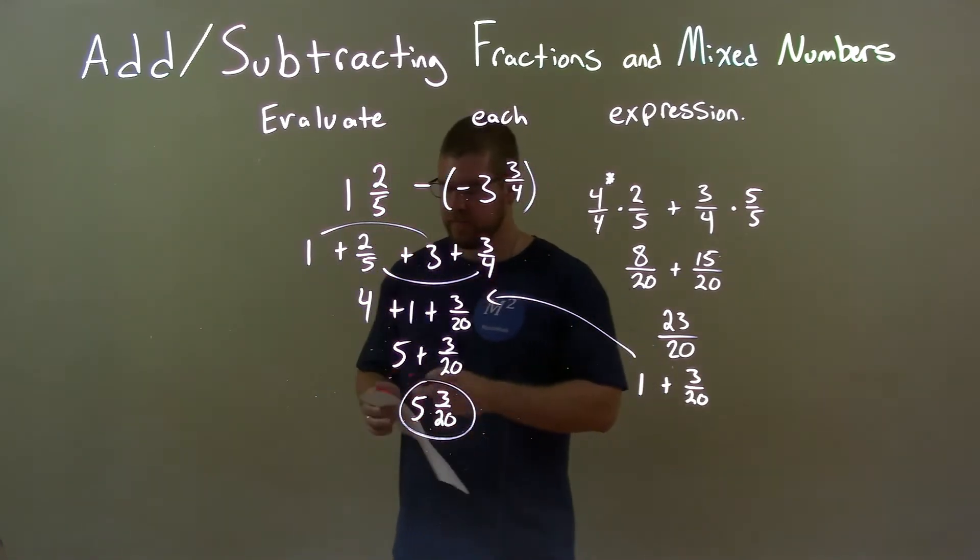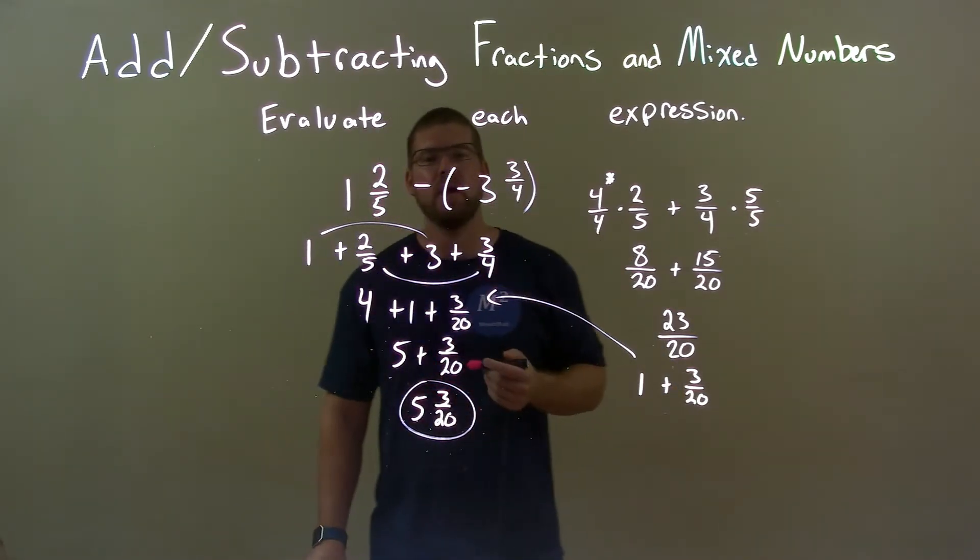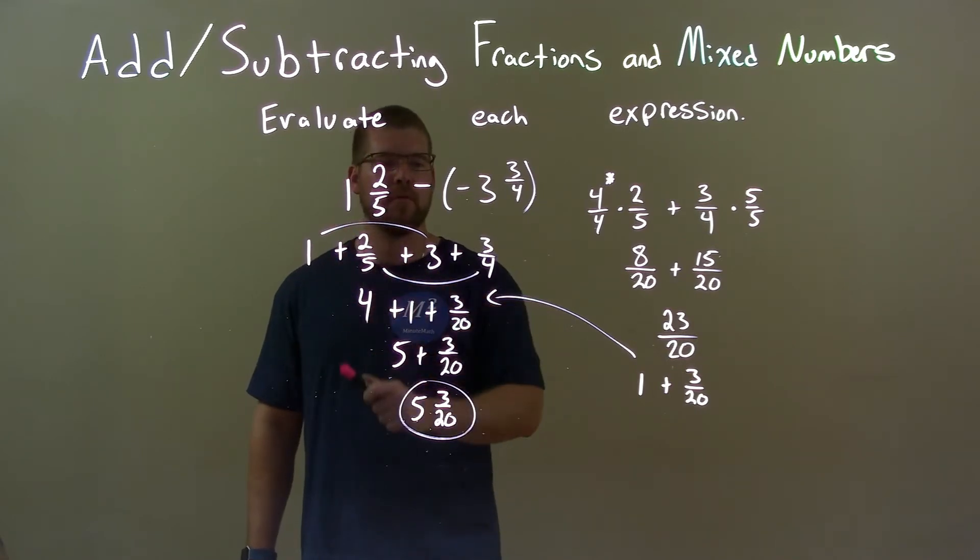So, quick recap. We're given these two fractions, 1 and 2 fifths minus a negative 3 and 3 fourths, and we have to simplify that or evaluate that. Subtracting a negative is adding a positive. Then, I broke these down each one to be a whole number and a proper fraction.